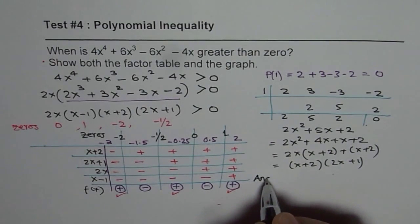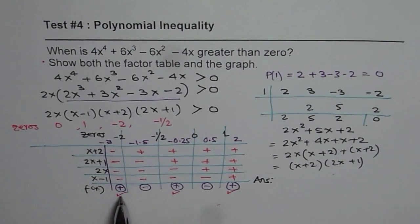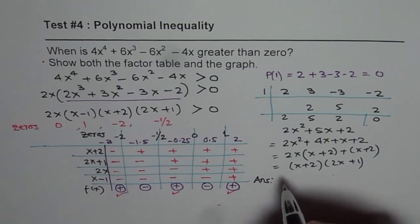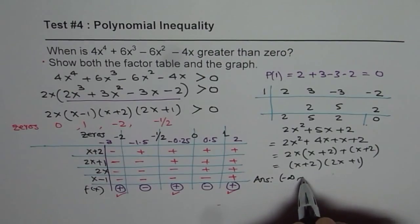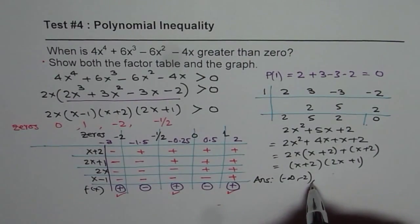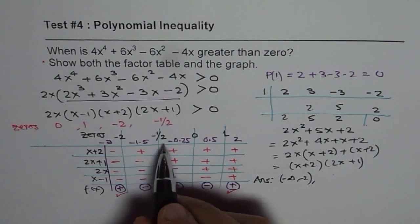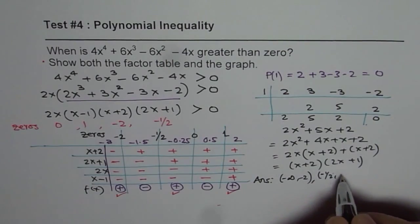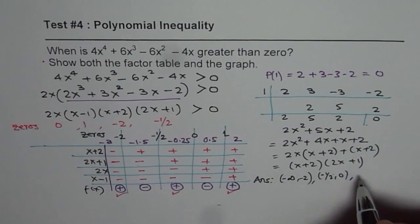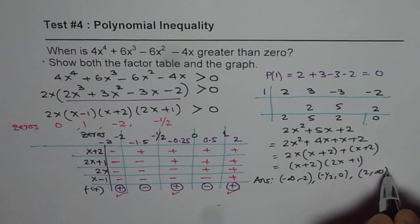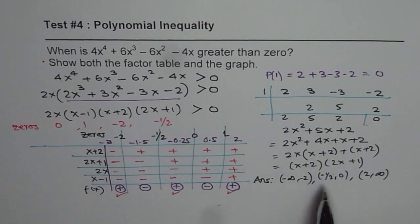And we can write down our solution here, which is the answer. So the interval is from minus infinity to minus 2. And then we have from minus half to 0. And then we have from 1 to infinity. So since they are greater than, no equal to sign will be used or no square brackets. So that is the factor table method.